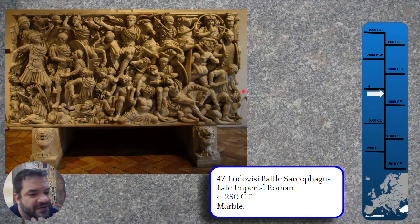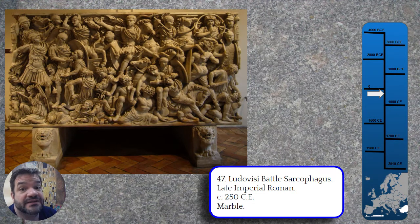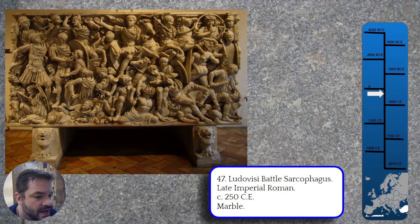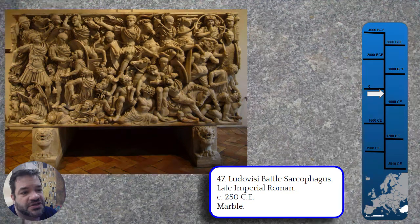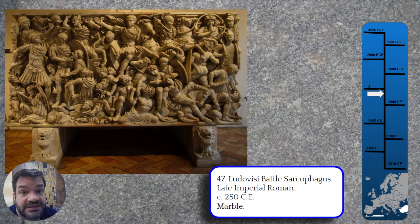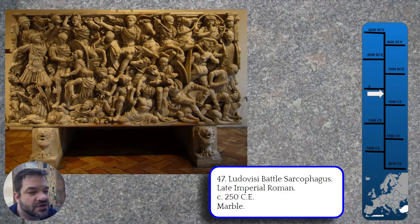The Ludovisi Battle Sarcophagus is significant because it begins to show how things are changing. This is late empire — the beginning of the late empire, 250 CE. In the late empire, things are going to start to change. We're going to start to lose touch with the classical past. Things are going to start to be less idealized, more abstracted, and we can start to see the very beginnings of the hints of that abstraction here.